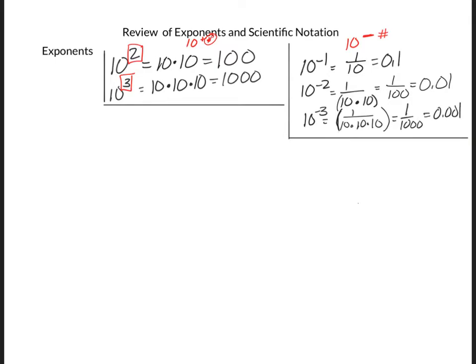What happens if I want to go the other direction? Let's say I have the number 100. How do I write that in exponential form? We're going to say there's a decimal place at the end of the zeros, and you're going to go back 1, 2, so that means it is equal to 1 times 10 to the 2. If it were 1,000, you go back three spots to get the 1 in front — back 1, 2, 3 — and we end up with 10 to the positive 3.